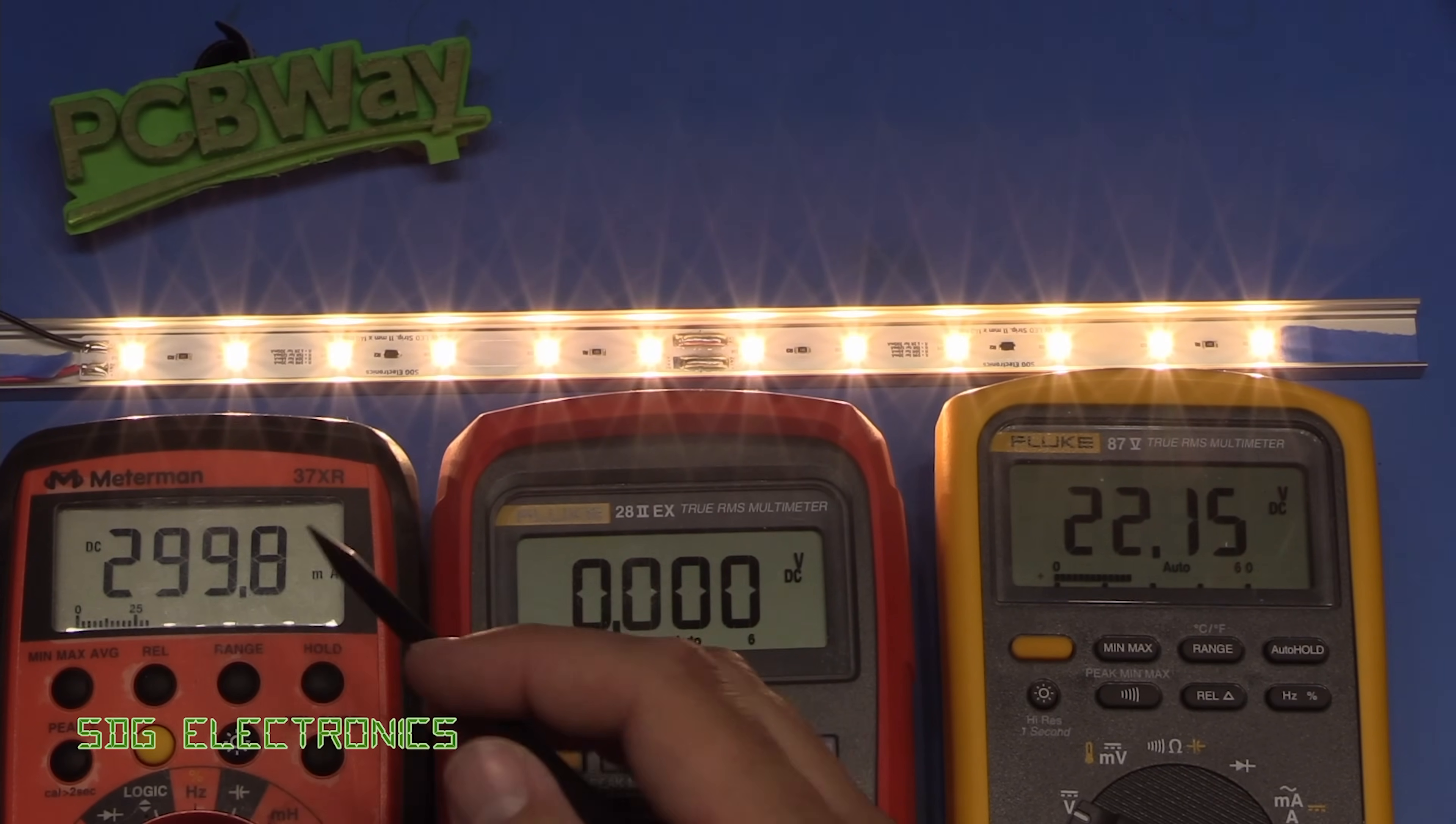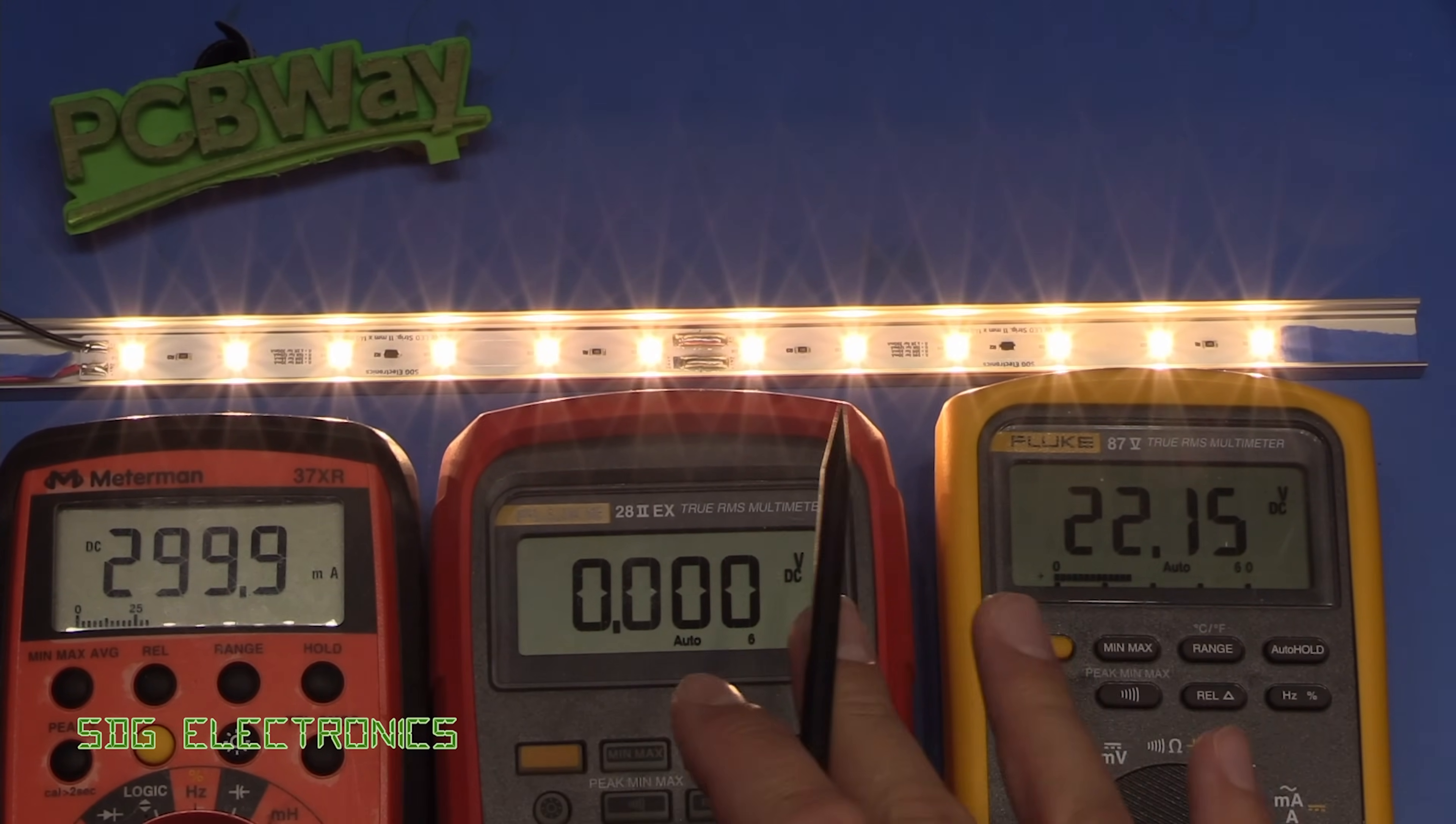and probably towards the upper ends of the limit. So temperature and everything all looks fine. Now we need to think about actually dimming these LEDs with these constant current drivers.